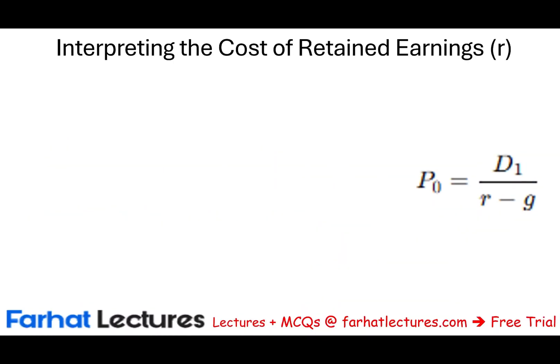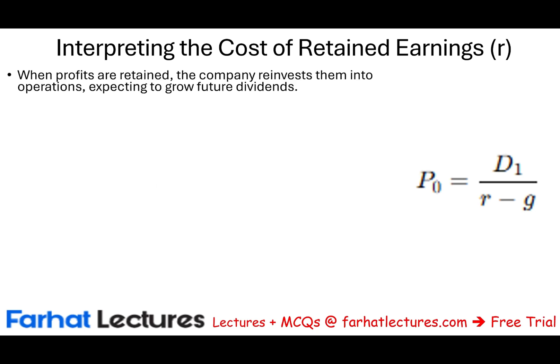So how do we interpret R as the cost of retained earnings? R is the expected rate of return that the investor expects, given an efficient market. Here's what happens: the company generates profit — revenues minus expenses equals net income. What do they do with this net income? They park it into retained earnings, keeping it. Then part of it could be paid out as dividend.